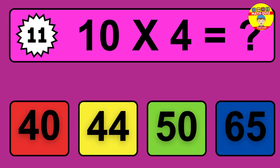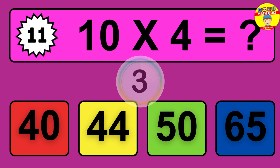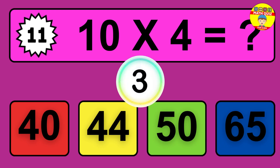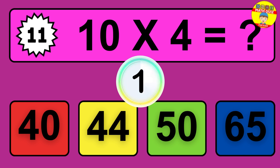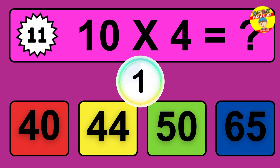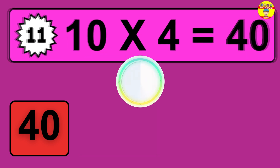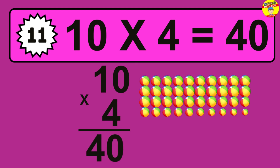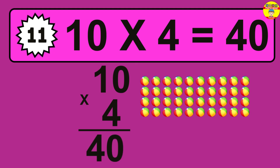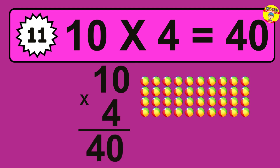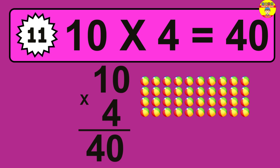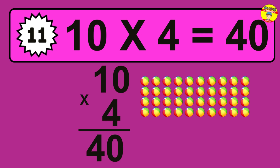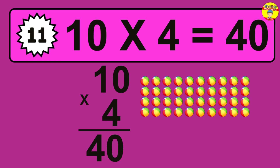Question eleven: 10 times 4 equals what? The answer is 10 times 4 is 40. To calculate, we have 10 groups with 4 balls each. So how many balls do we have? 40 balls.